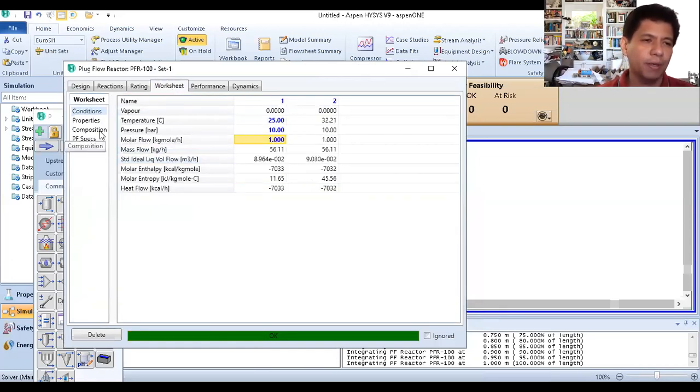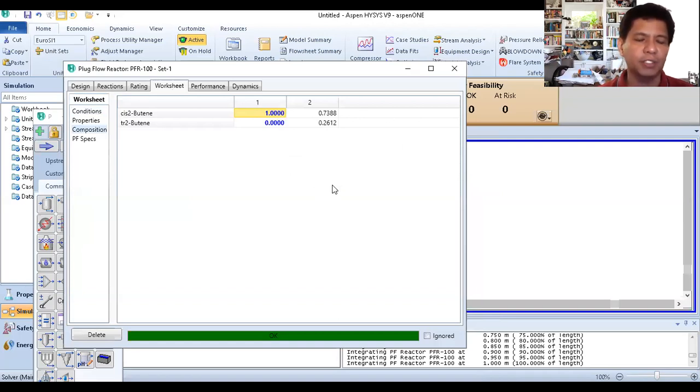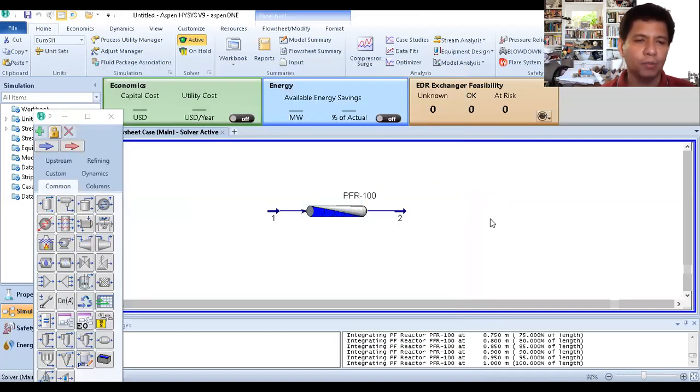When you check, it's only about 26%, 26.12% conversion. That's too low. We want 90%. So to calculate the correct volume, we'll use the adjust function. We'll adjust and increase the volume or lengthen the reactor until the conversion becomes 90%. That's our target, 90% conversion. So just add an adjust function, then double-click.